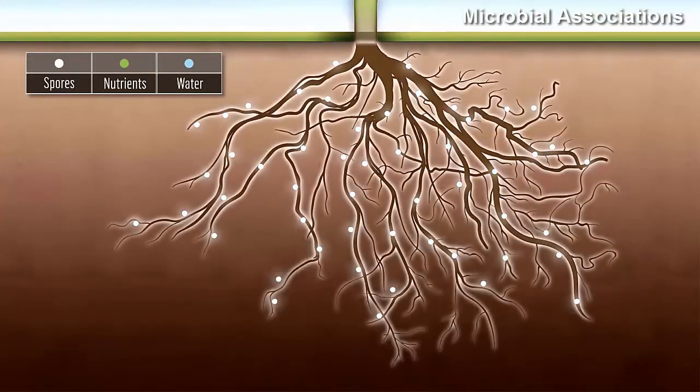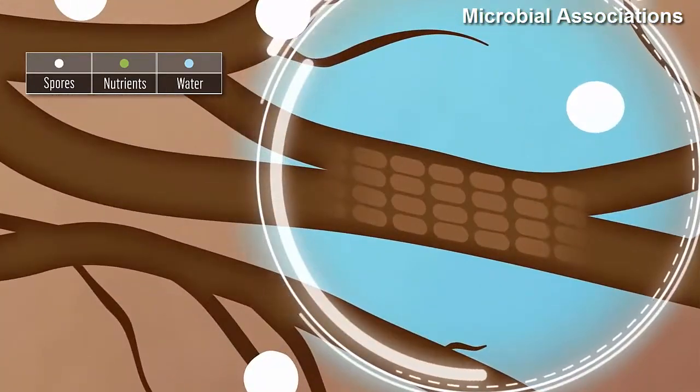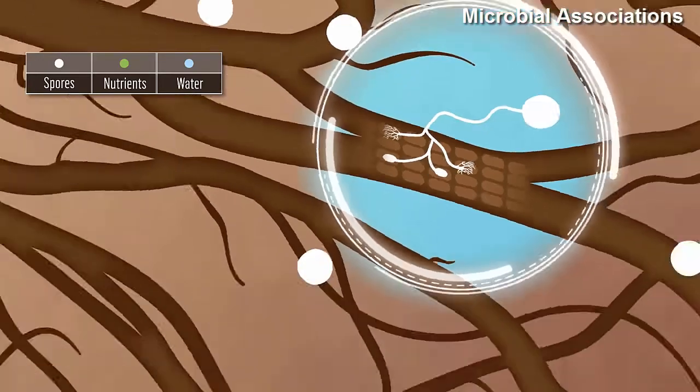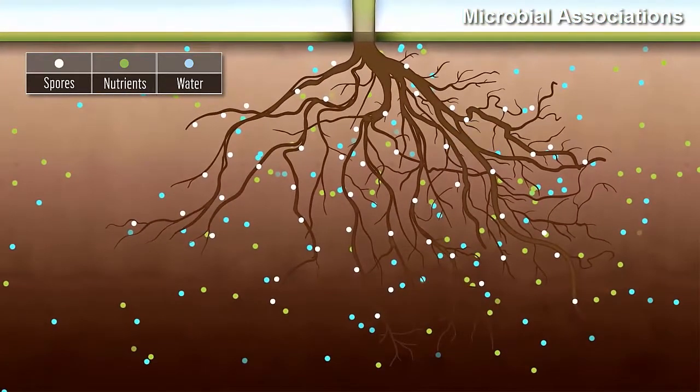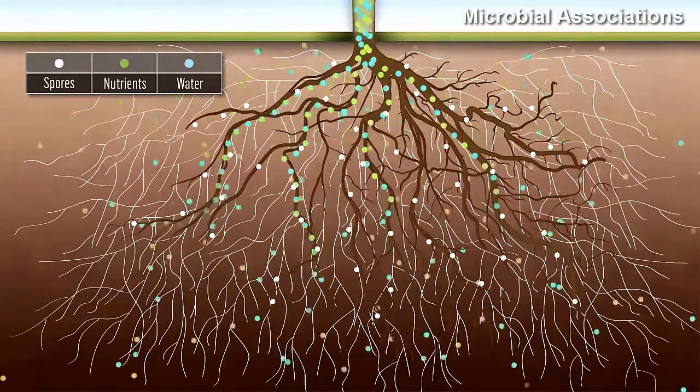The fungus is able to absorb and concentrate phosphorus much better than it can be absorbed by the root hairs. It also forms thread-like strands that facilitate the absorption of water and nutrients. The plant in return provides sugars and amino acids to the fungi.